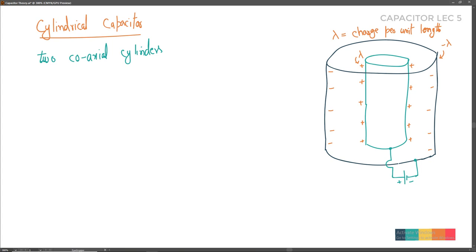Now for the mathematical expression: capacitance C = charge / potential difference, where we take the magnitude. Let the inner cylindrical shell radius be 'a' and the outer cylindrical shell radius be 'b'. Let point A be on the inner shell surface and point B on the outer shell surface. Charge Q = λL.